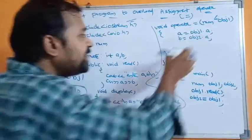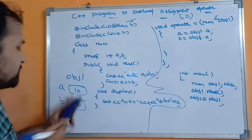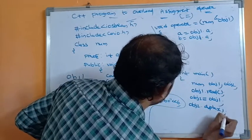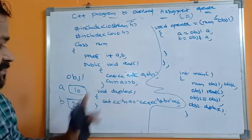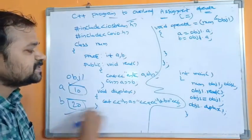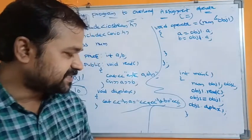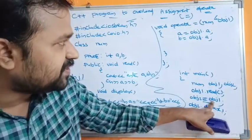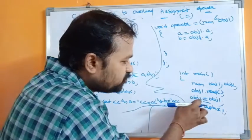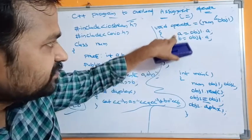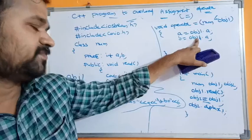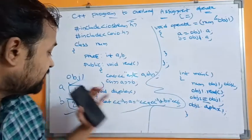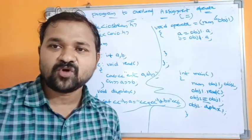So for obj2, the a value will become obj1.a which is 10, and b value will become 20. Whenever the display function is called, the control goes to the display function, and in obj2, a value is 10 and b value is 20. In this way we can overload the assignment operator. Whenever the assignment statement is executed, the operator function is called, obj1's information is passed, and obj2's a becomes 10 and b becomes 20.